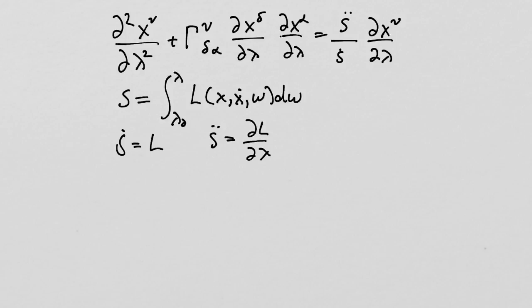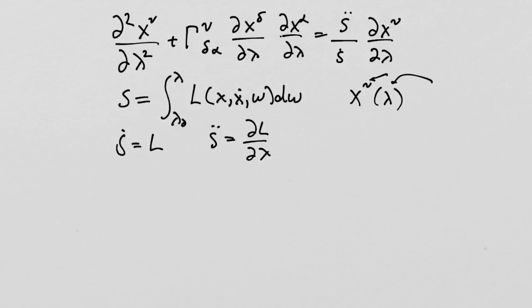Last time we ended up with this expression, derived through a variational method. As a reminder, the path in spacetime we are using this form of notation — the path in spacetime we're discovering here is given by x superscript nu as a function of the parameter lambda. This is the resulting geodesic equation where s is the path length itself, which we're extremizing — it ends up being the longest path length usually.